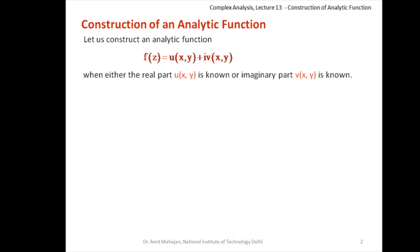Let us construct an analytic function f(z) = u + iv when either the real part u is known or the imaginary part v is known. If you are given the real part u, then how to construct f(z); or if you are given v, then how to construct f(z). Let us discuss when the real part u is known — the similar procedure can be applied for the v function. I will just let you know where exactly the change will be required.